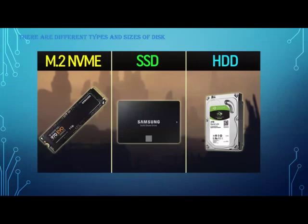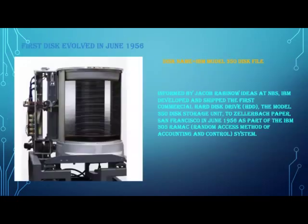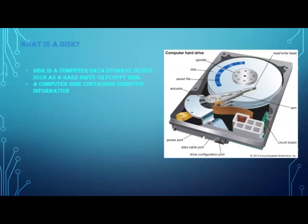I'll tell you why HDD is slower and SSD is faster. HDD is slower because it has to read the file using read and write heads. You can see the blue dots on the disk — the read and write heads have to physically move to that location, so it takes time. That's why it's a bit slow.